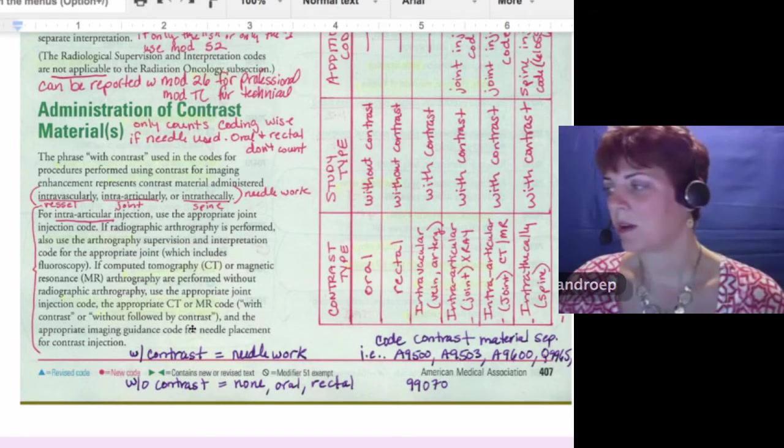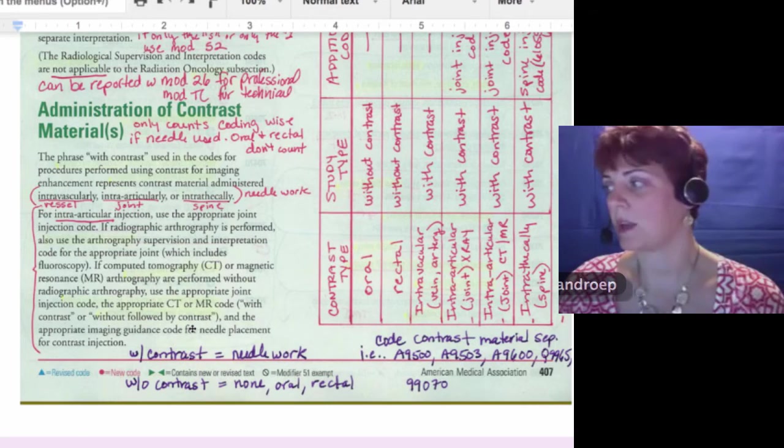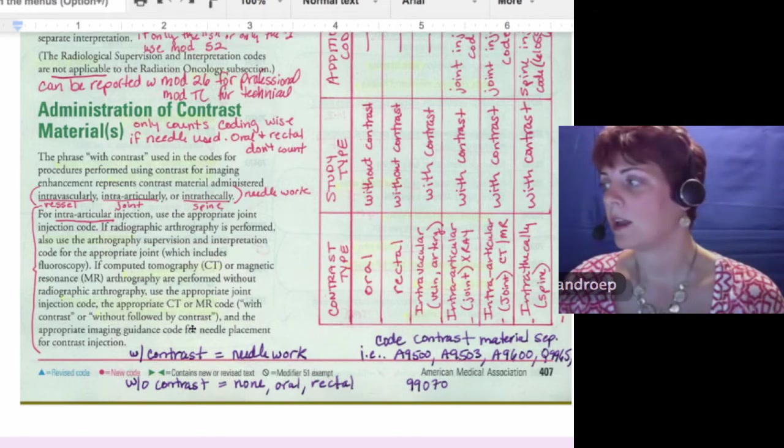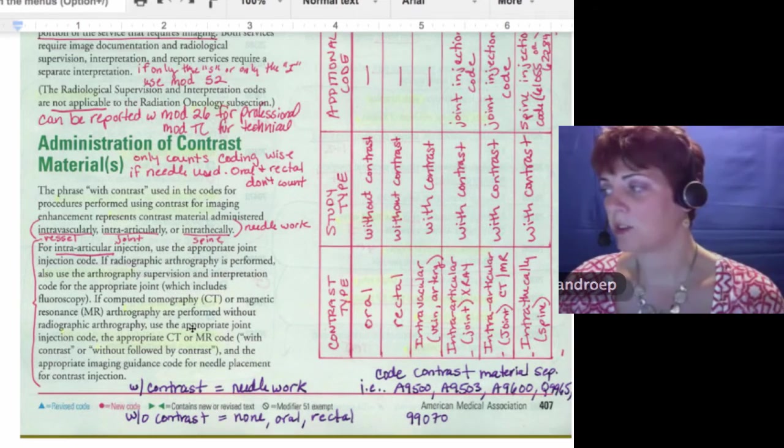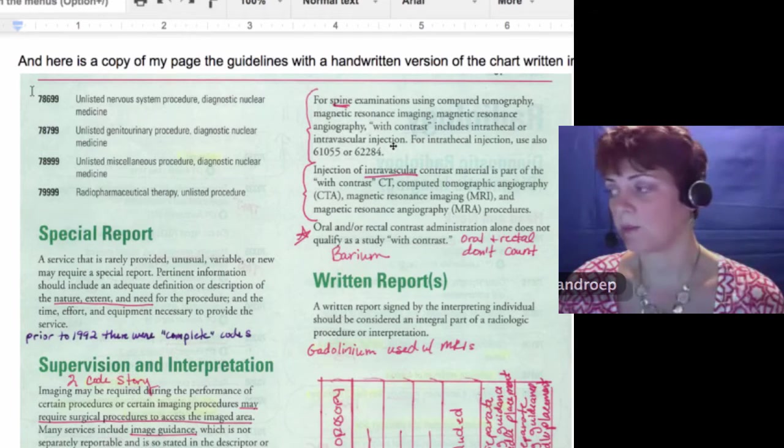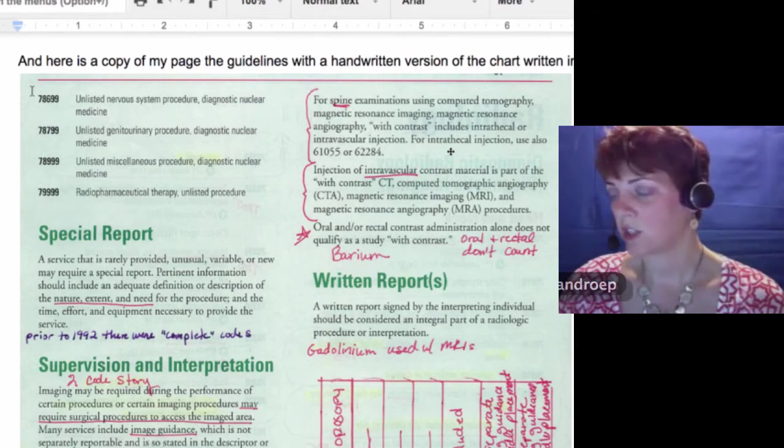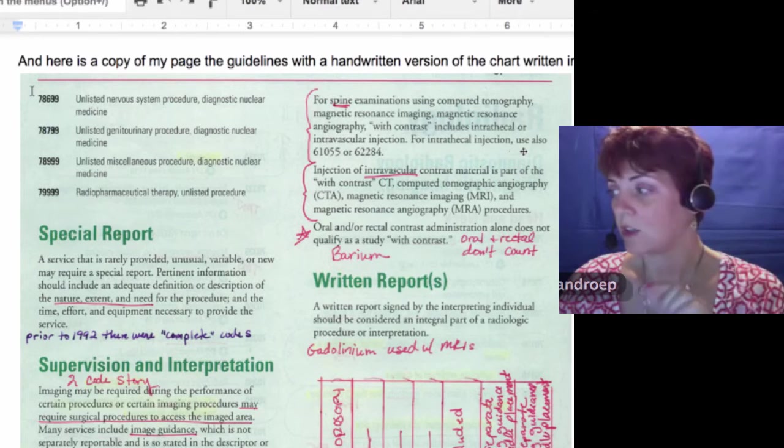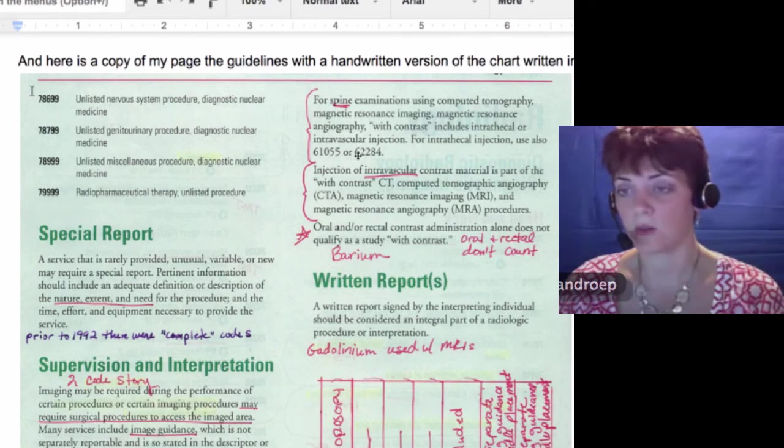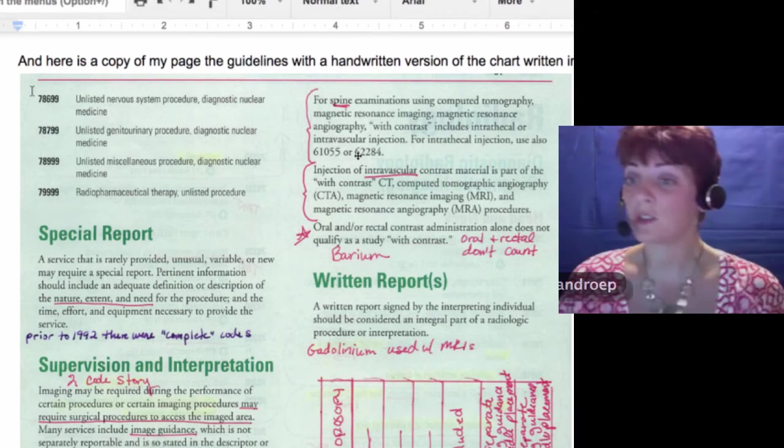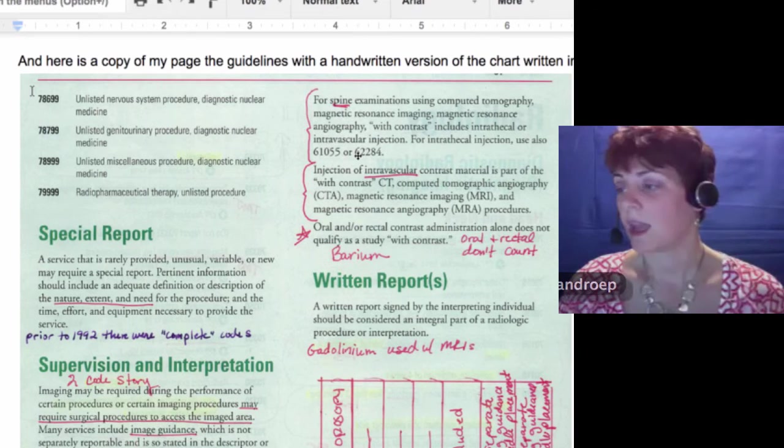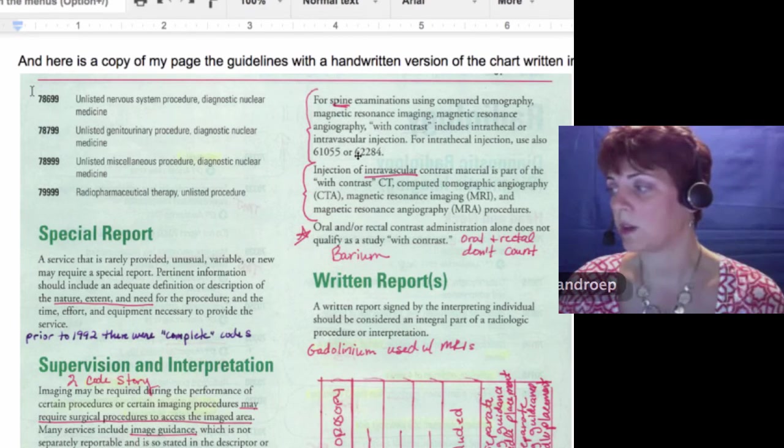To finish it off, the next paragraph, for spine examination using CT, MR, MRA with contrast, includes intrathecal or intravascular injection. For intrathecal injection, so this is the spine again, use also these two codes. This is a permission statement for additional codes that we can use and get additional reimbursement for the physician.